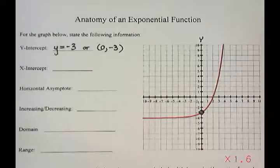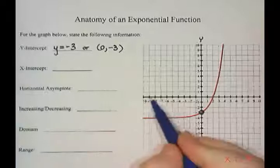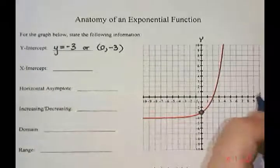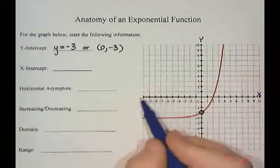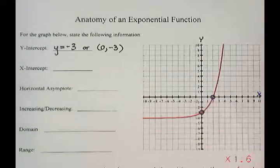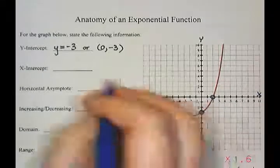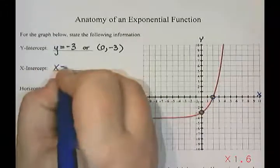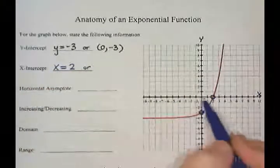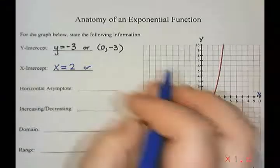The x-intercept is where the graph crosses the x-axis, which is the horizontal one. To find the x-intercept, we look at where the graph crosses the x-axis — that point right there at x equals 2. So I can either write x equals 2, or say that this is the point (2, 0), because the y-value would be 0.